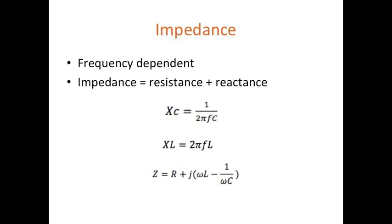Impedance is simply the combination of resistance and reactance. Reactance varies with frequency. The formula XC is how to calculate a capacitor's reactance.